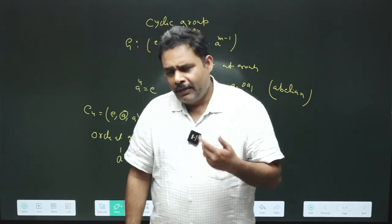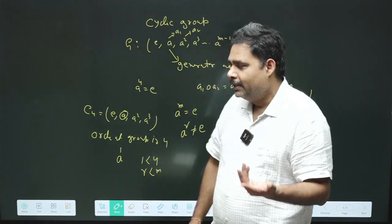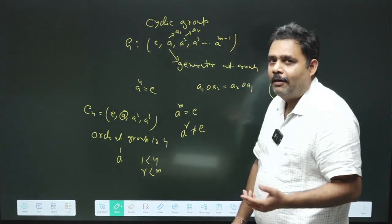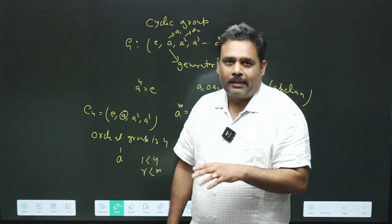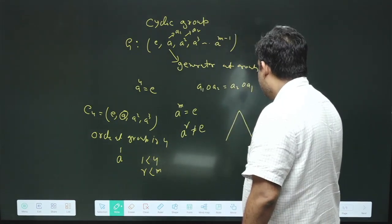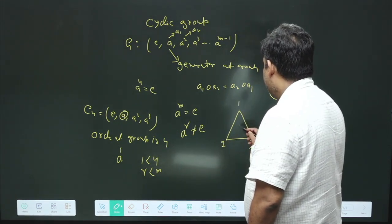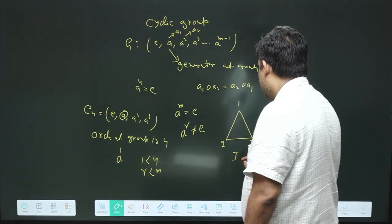We have another very interesting example: the rotation of an equilateral triangle about the Z axis. We have an equilateral triangle with vertices one, two, three. And this is your identity or E.